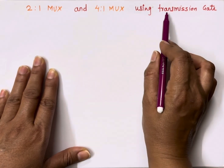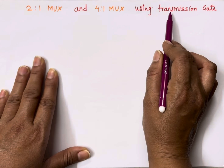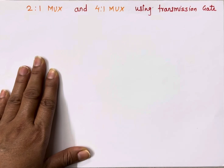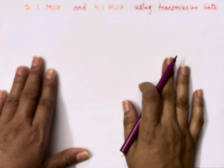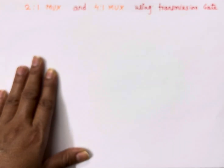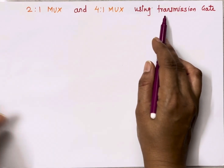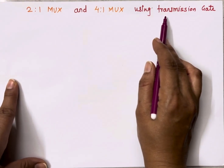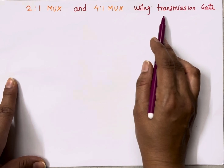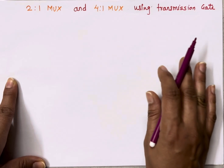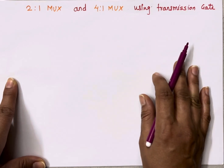How does a transmission gate work? What are the symbols of a transmission gate? I have prepared a separate video for it and the link is given in the description box. In short, a transmission gate is used to pass the signal and it gives a strong value of 1 as well as a strong value of 0. Whereas when we use a single NMOS or PMOS, it either gives a strong 0 or strong 1 — PMOS gives a strong 1, NMOS gives a strong value of 0.